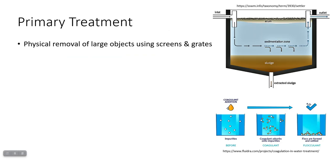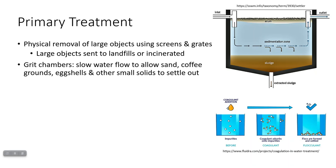Let's talk primary treatment. Primary treatment is physically removing stuff. There's sometimes pre-treatment, which uses screens, grates, and mesh to remove large objects; those can be taken to landfills or incinerated. Then you have grit chambers where water flow is slowed so smaller solids can start to settle out — things like sand, coffee grounds, or eggshells.